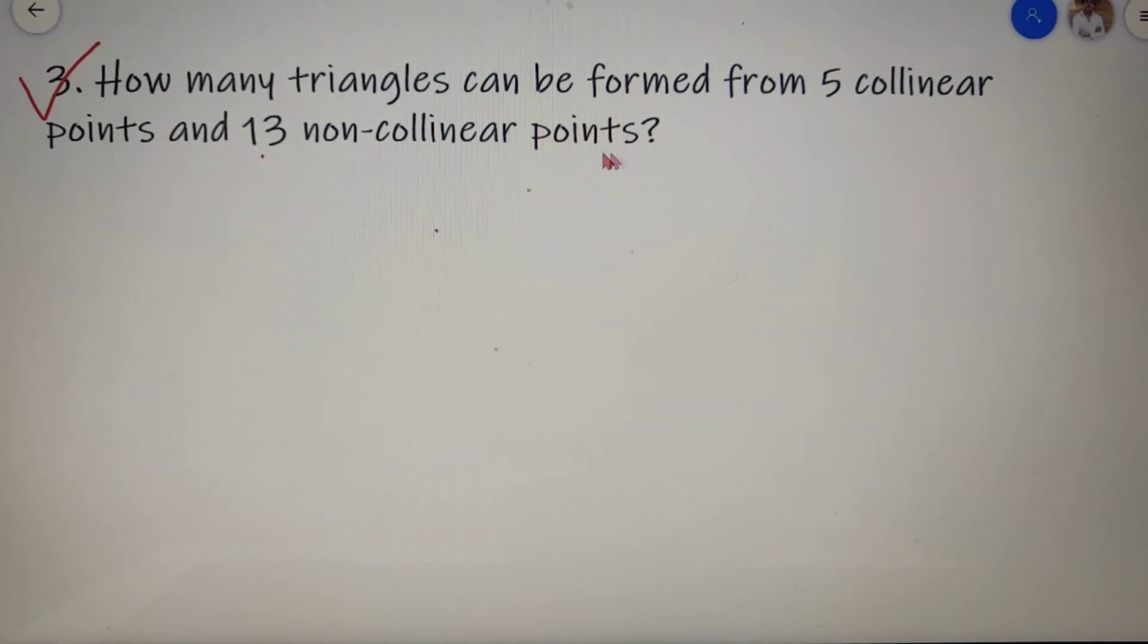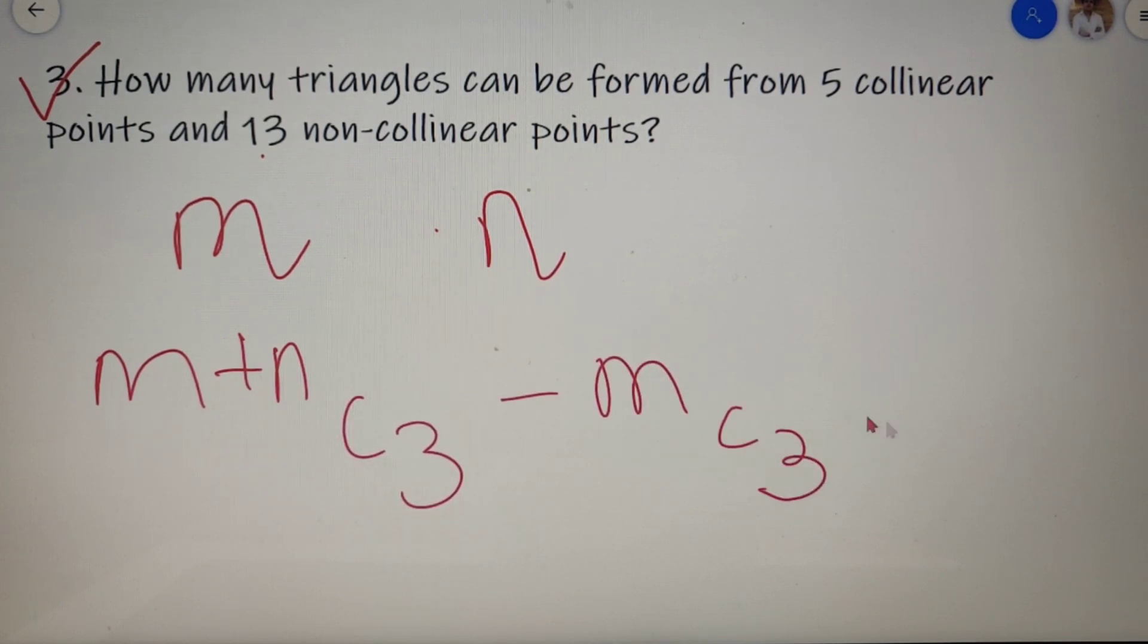So for solving these kinds of questions we have a very simple formula. If there are m collinear points and n non-collinear points, then the total number of triangles that can be formed is equal to (m plus n)C3 minus mC3. So how did we get this formula?